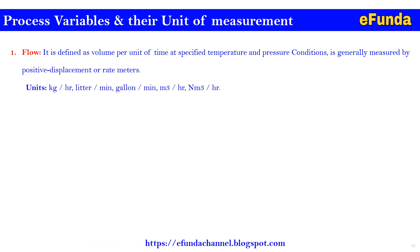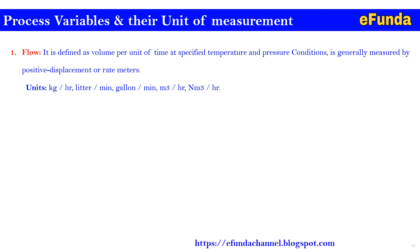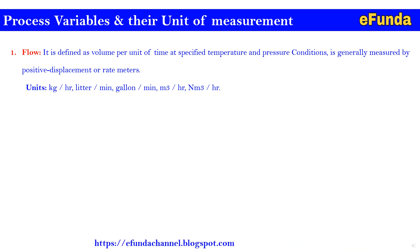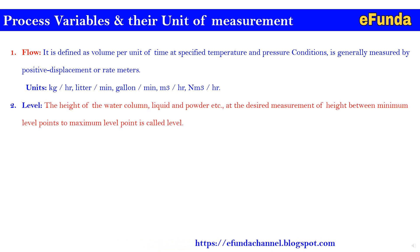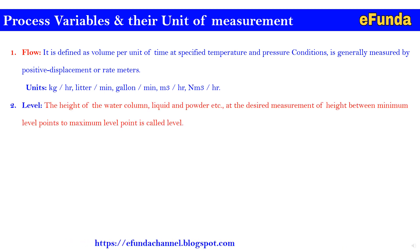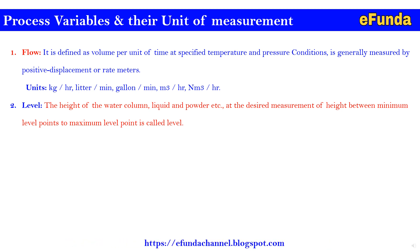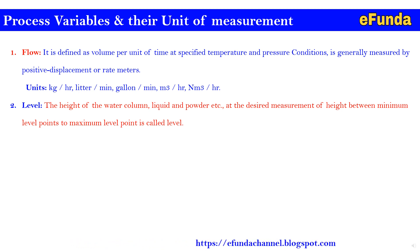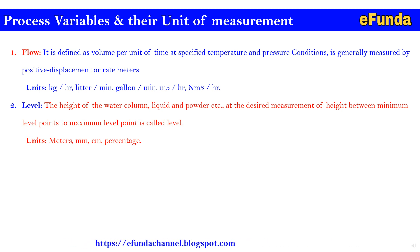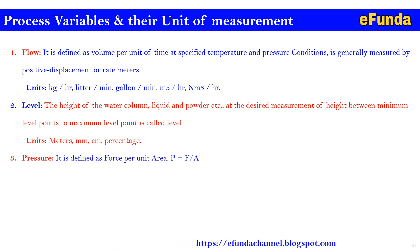Units of flow measurement are kg per hour, liter per minute, gallons per minute, meter cube per hour, newton meter cube per hour. Second is level — the height of a liquid or powder at a desired measurement between minimum and maximum level points is called the actual level. Units are meter, mm, centimeter, and percentage.